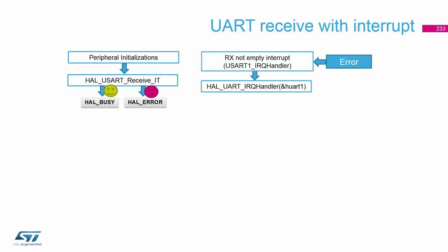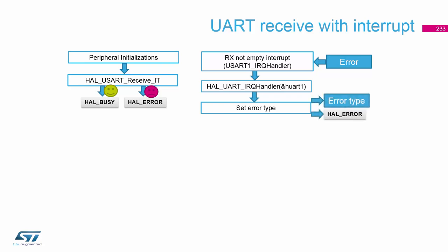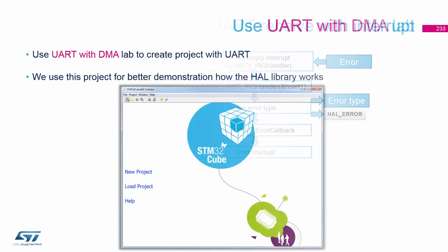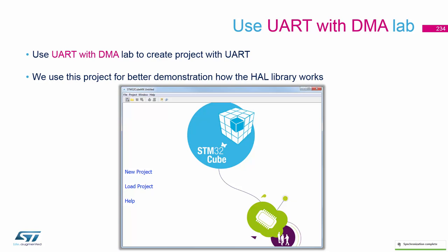In case of an error, we set the error type, end with an error, and call the error callback — it's still similar. We then end with the interrupt. I hope this section was useful. We'll move to the next lab and start with DMA.